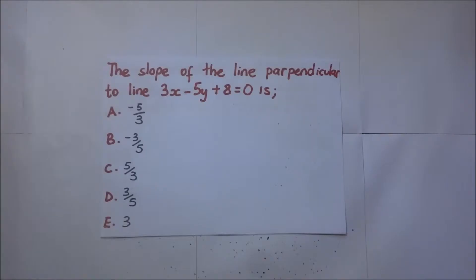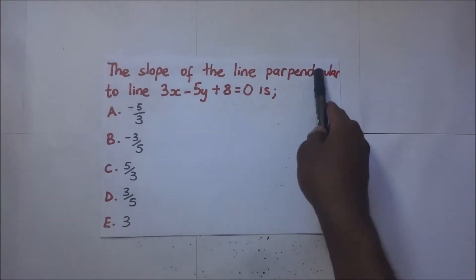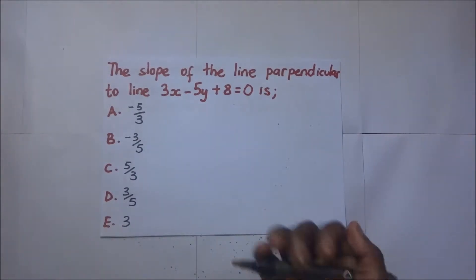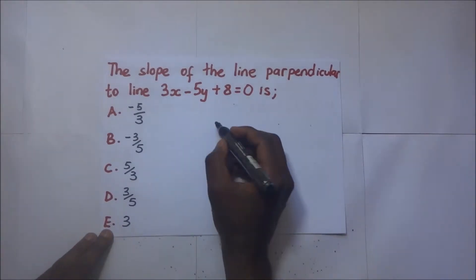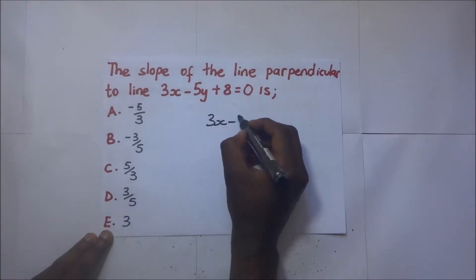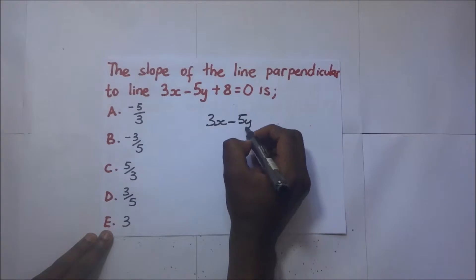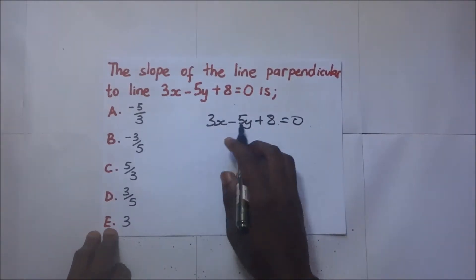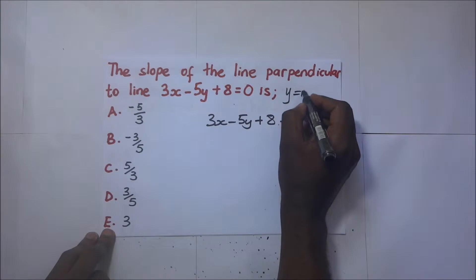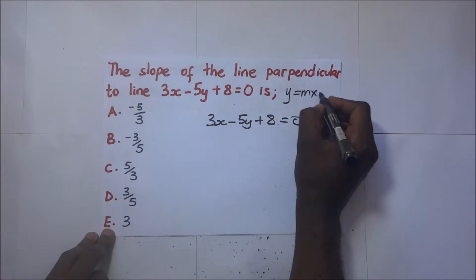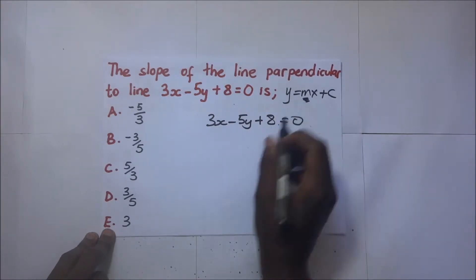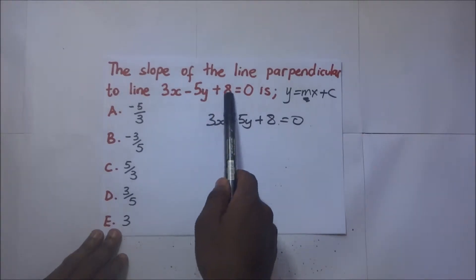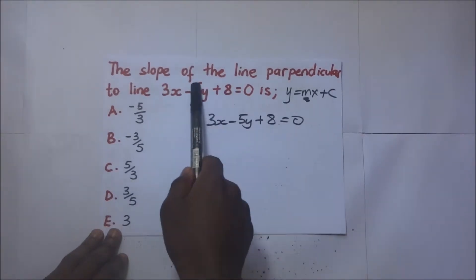Next, they are asking for the slope of the line perpendicular to the line 3x minus 5y plus 8 equals 0. We need to rearrange this in the form y = mx + c so we can find the value of m, the slope of this line. After finding the slope of this line, we can find the slope of the perpendicular line.